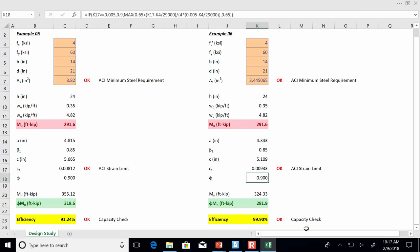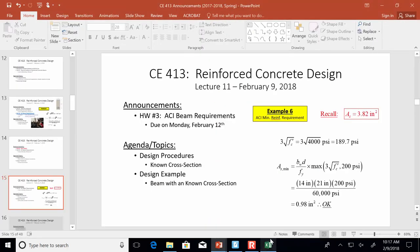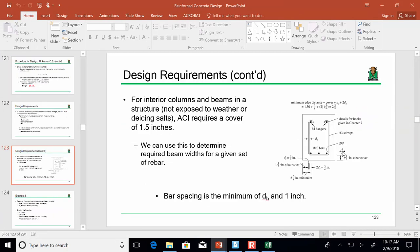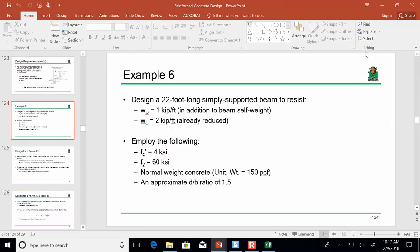That's a good question. The question was, how do I get the phi to change? It's right here. Basically, what I'm saying is, if the strain is greater than or equal to 0.005, it's 0.9. Or, it's the maximum of 0.65 or that line. Does that make sense? Anybody have any questions on this stuff? And is everybody good on example six?